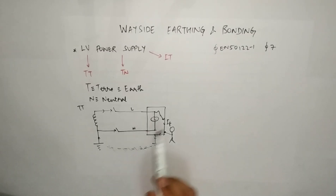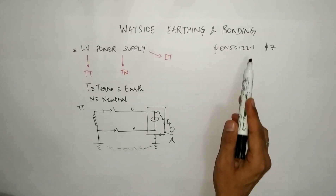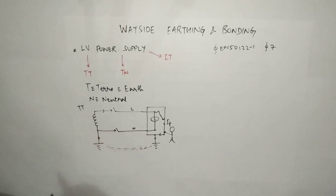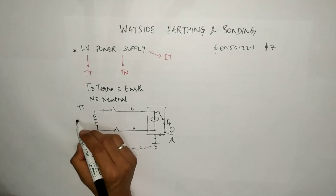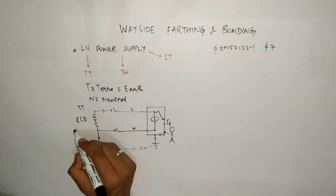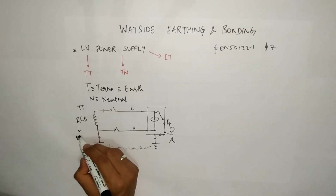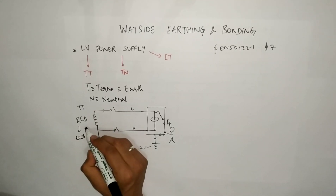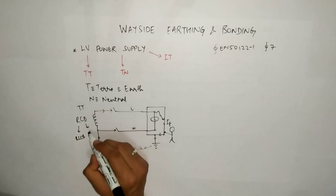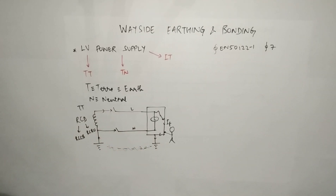To be on the safe side, EN 50122-1 recommends that when you go for a TT system, always use an RCD. The RCD can be either an RCCB — a residual current circuit breaker — or an RCBO, which is a combination of an MCB and RCCB.